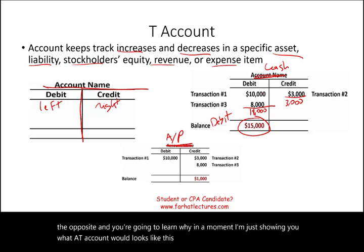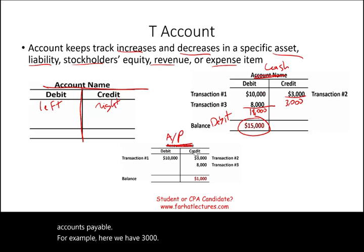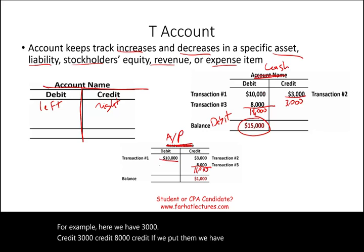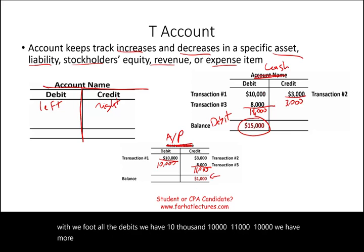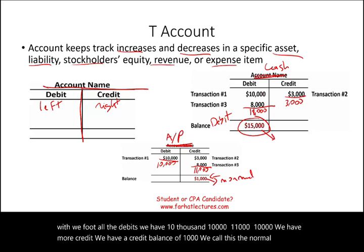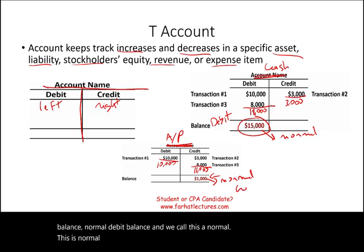Here's another T account — accounts payable. We have credits of $3,000, $3,000, and $8,000. If we foot them we have $11,000 in credits. The debits total $10,000. We have more credits, so we have a credit balance of $1,000. We call the cash balance a normal debit balance, and the $1,000 accounts payable balance a normal credit balance.